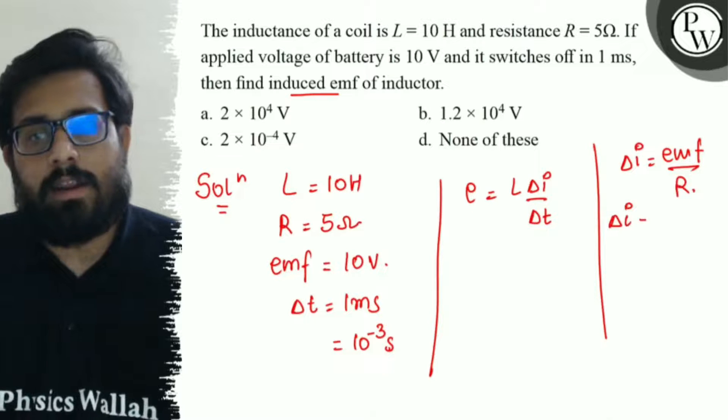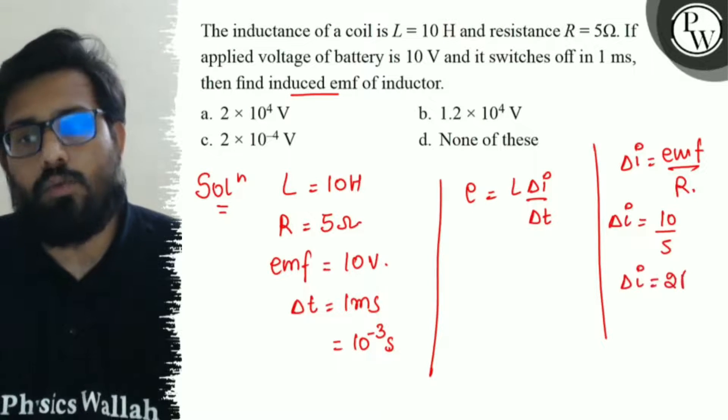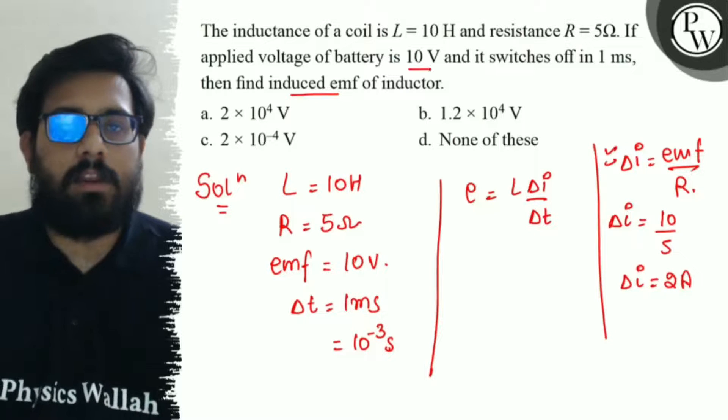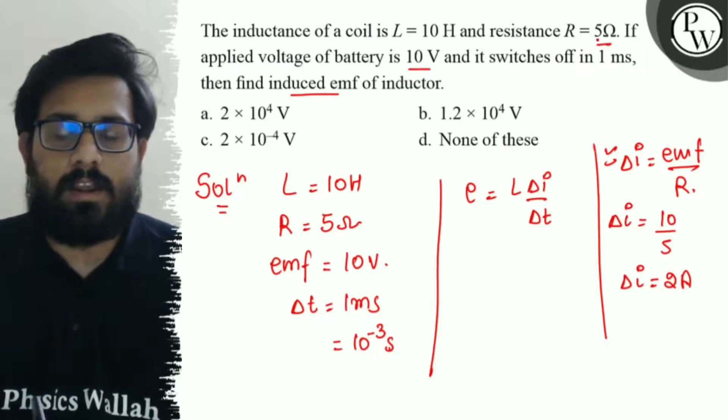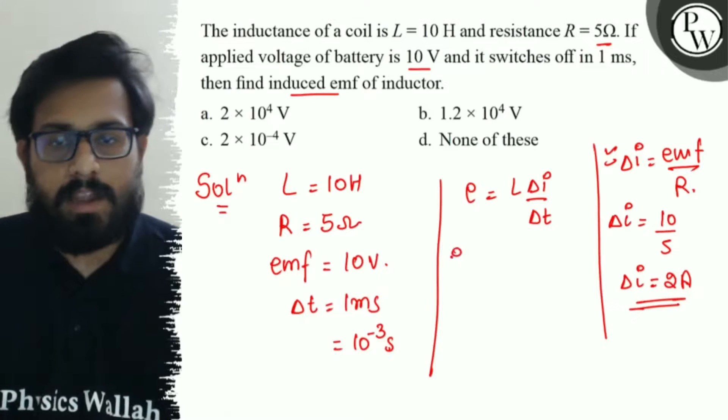So the emf is 10 volt, resistance is 5 ohm, so the current value is 2 ampere. The battery provides 10 volt through 5 ohm resistance, current will be 2 ampere.